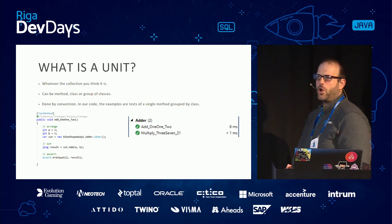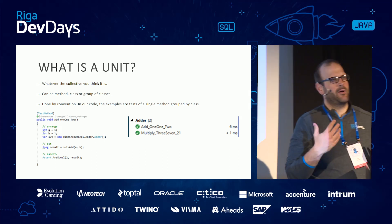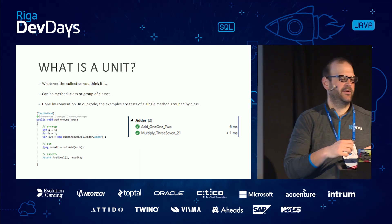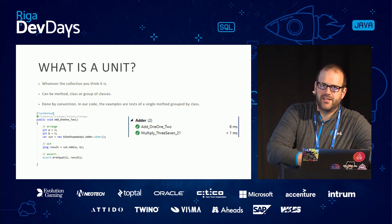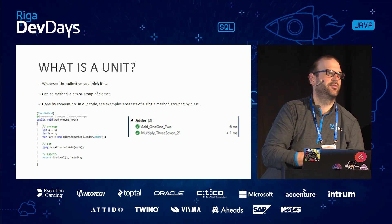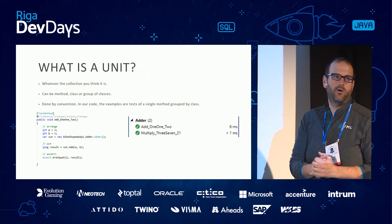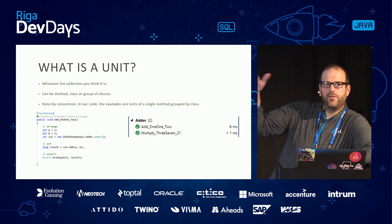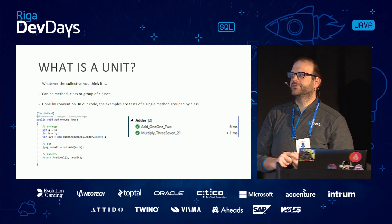Let's talk about what a unit is. When I form projects and teams, we define what a unit is as a group. On most of my projects it is a method. Some people define the unit of work as a class; others go even further. In all the examples, it's a test of a single method, and tests are grouped by class.